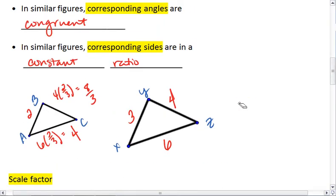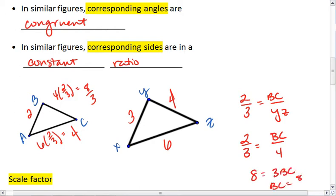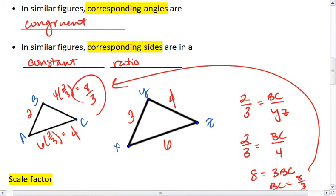To solve these you could have also set up proportions. We could say since we're in a 2 to 3 ratio, then side BC to YZ must be in that same ratio. We solve, we get 8 equals 3 BC. BC equals 8 thirds, which is in fact what we got up here.